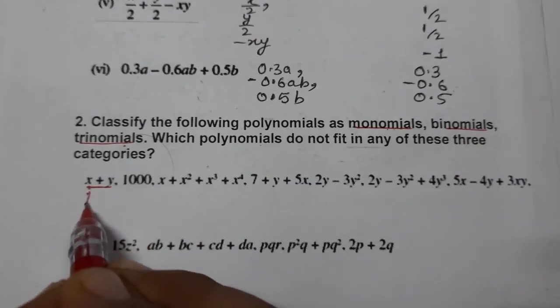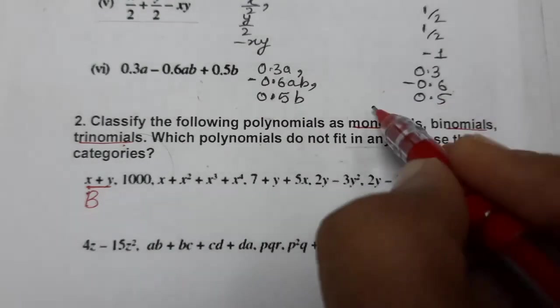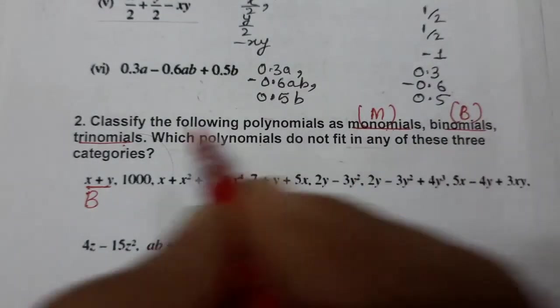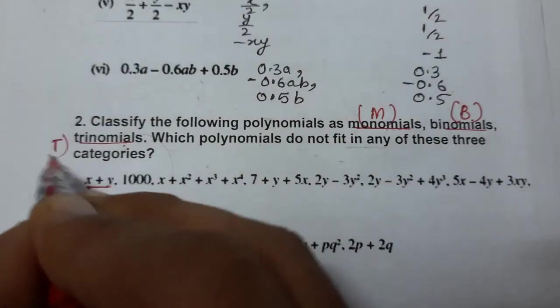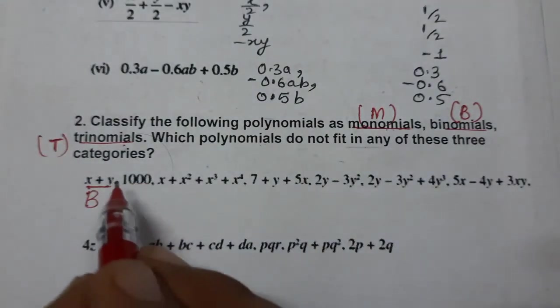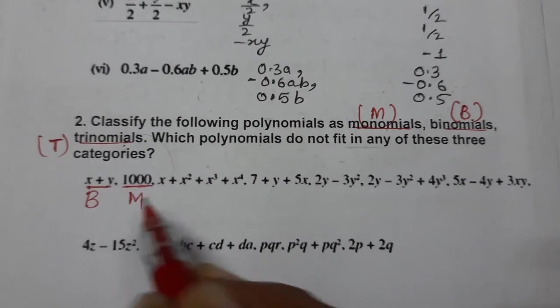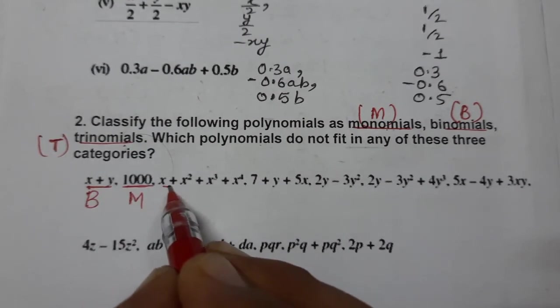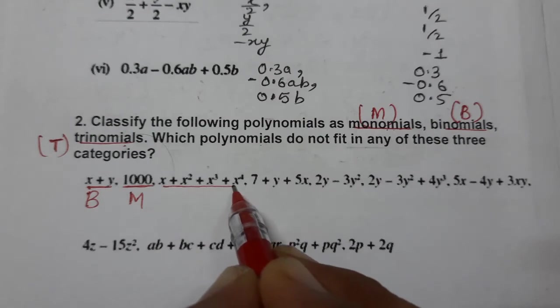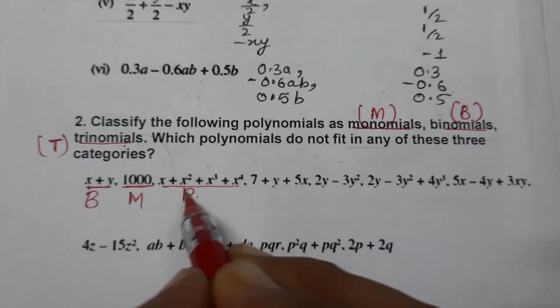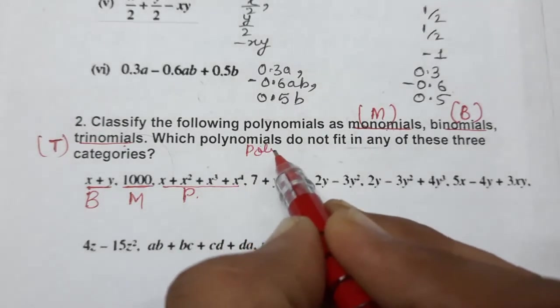So it is binomial. I am writing short form: Monomial M, Binomial B, Trinomial T. So you can write full also. This is 1000 only, so 1000 means monomial. x + x² + x³ + x⁴, four terms. So this category means, simply we can write this: Polynomial P.